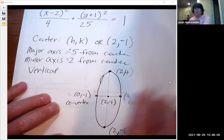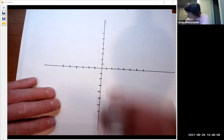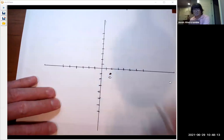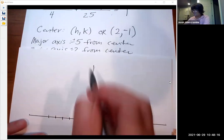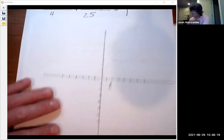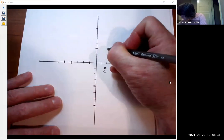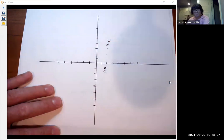I'm going to make a prettier copy of it on this graph. We said the center is at two negative one. I'm just going to label it with a C. That's the center. The major axis went five up and down from the center. So we're going to go up one, two, three, four, five. I'm going to put a V there for vertex.